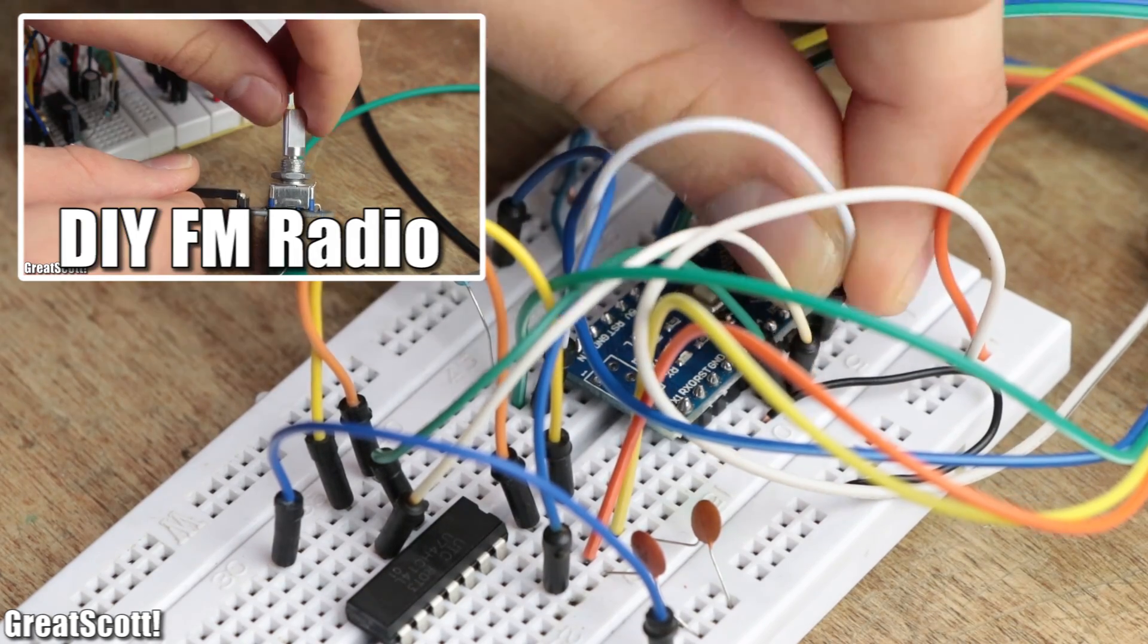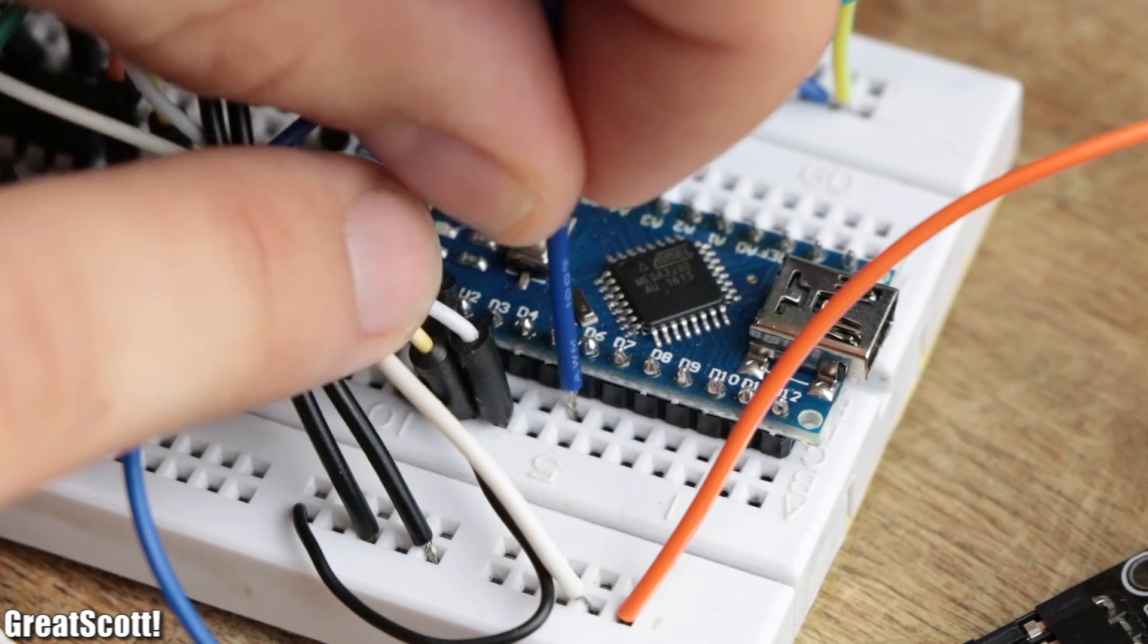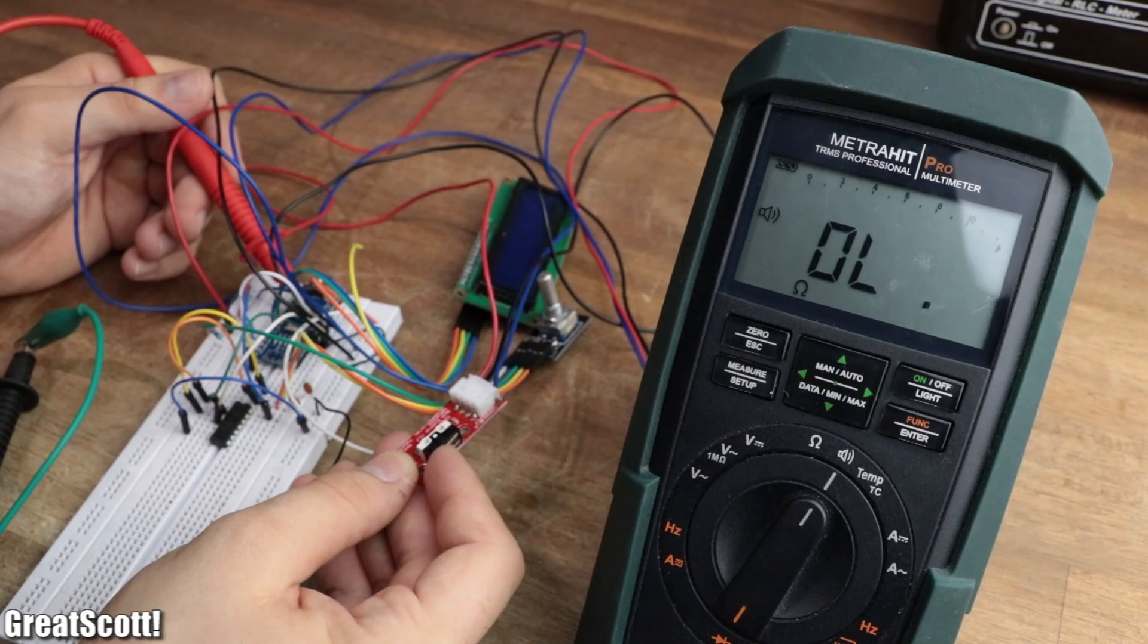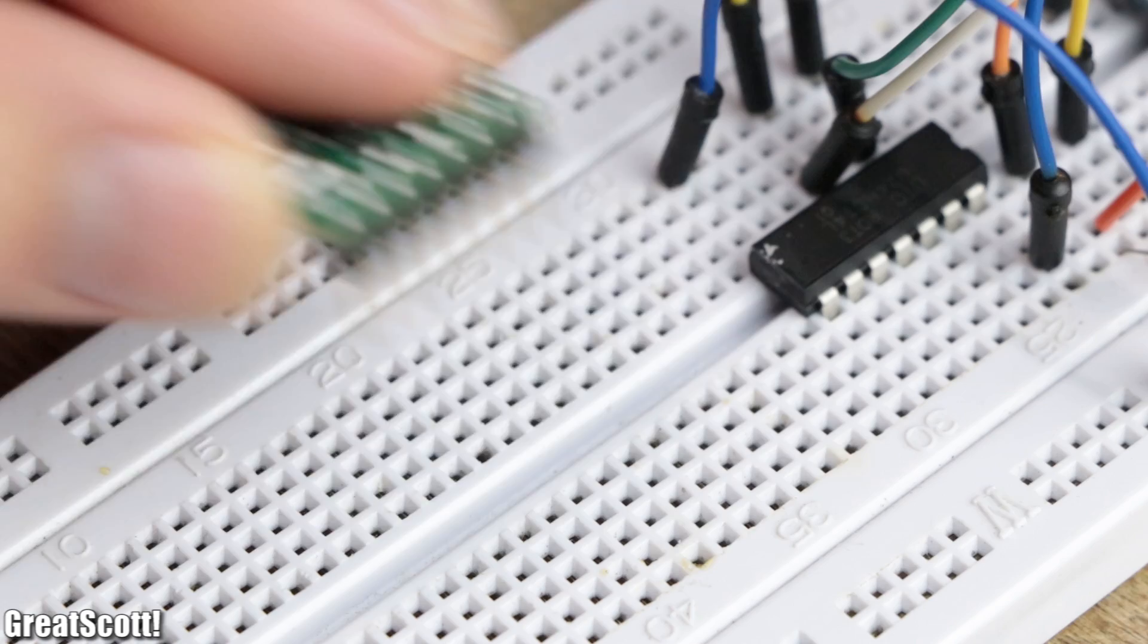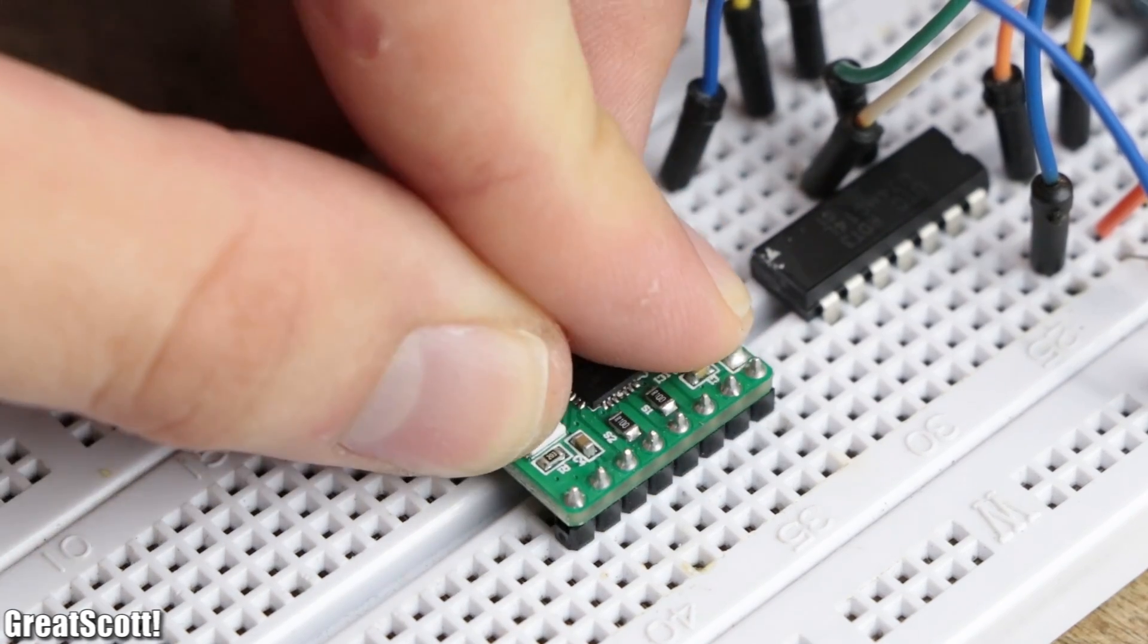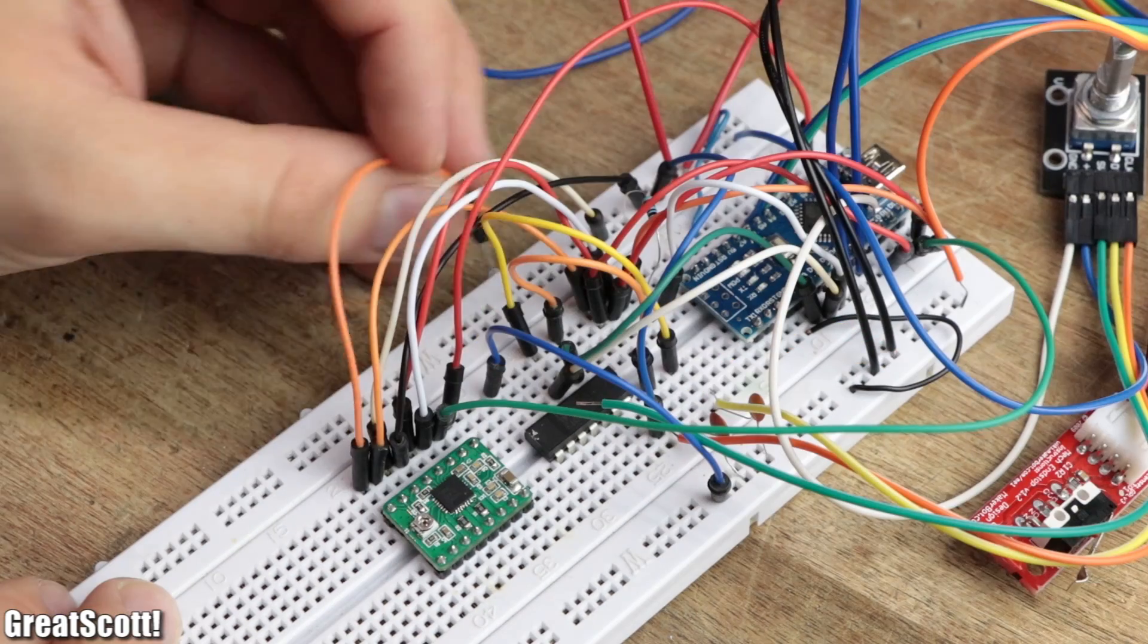Nevertheless, I then connected the two limit switches to pin 7 and 8, which will connect the input pins to ground once the switches are activated. And completed the electronic circuit with an A4988 stepper motor IC.